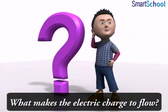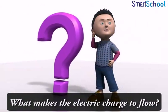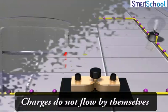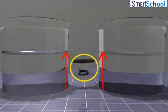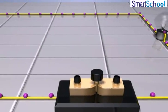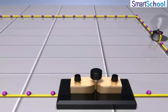Now do you know what makes the electric charge to flow? Well, charges do not flow by themselves. Just as water in a perfectly horizontal tube does not flow, charge in a copper wire or any other conductor does not flow by itself.